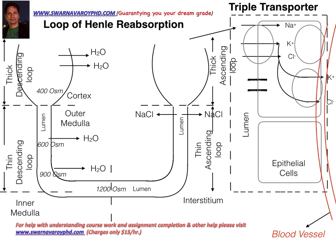You can see that chloride is entering the blood vessels. Now, these round transporters are the ATPases — that means these are active transport. When I say active, I mean that energy is required while taking in these ions. Energy in the form of ATP is utilized to take in sodium, potassium, and chloride. And you can see sodium again entering the blood vessel.